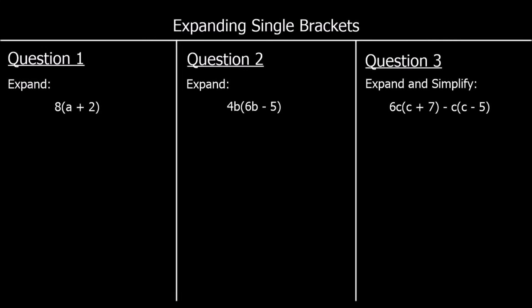To finish up, we've got three questions. Pause the video, give them a go, and press play when you're ready for the answers. Question 1: the question says expand, so we're going to get rid of the brackets. 8 times a is 8a, and 8 times 2 is 16 — it's a positive 16. So 8a plus 16.